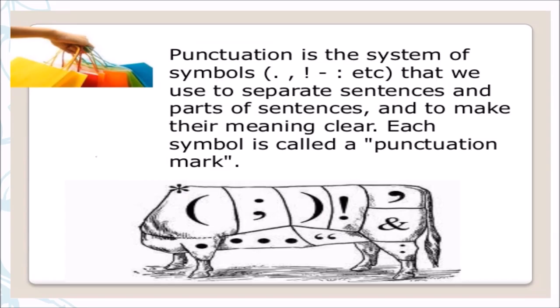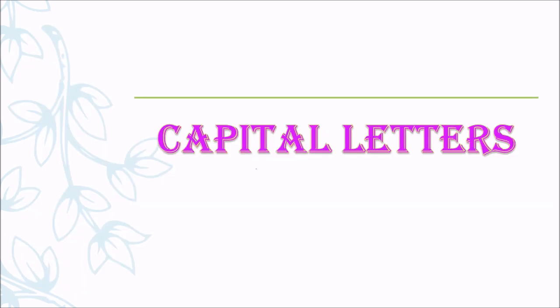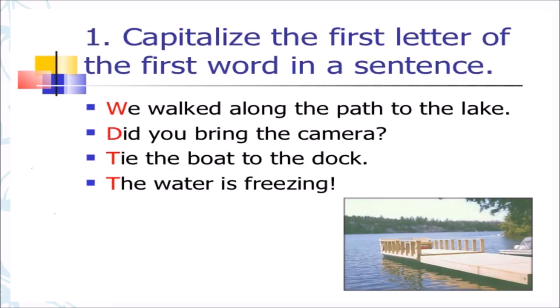Students, first we have to know what is meant by punctuation. Punctuation is the system of symbols that we use to separate sentences and parts of sentences, and to make their meaning clear. Each symbol is called a punctuation mark. First, we are going to see capital letters. Capitalize the first letter of the first word in a sentence. Examples: 'We walked along the path to the lake.' 'Did you bring the camera?' 'Tie the boat to the dock.' 'The water is freezing.'